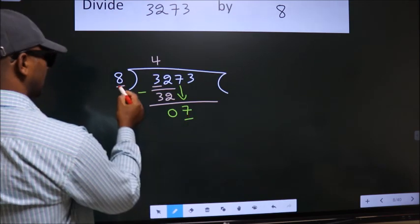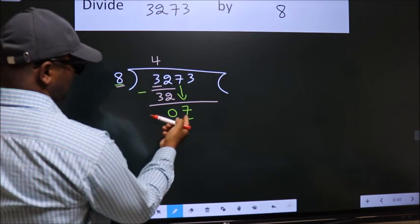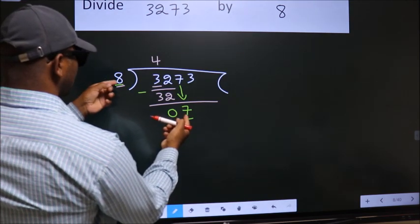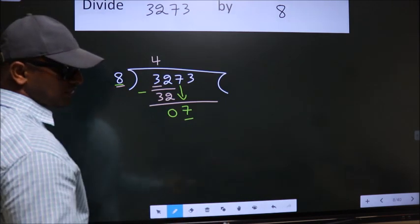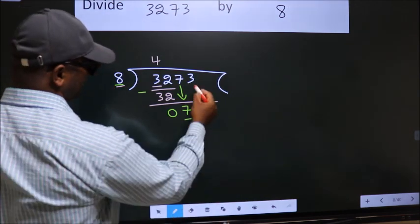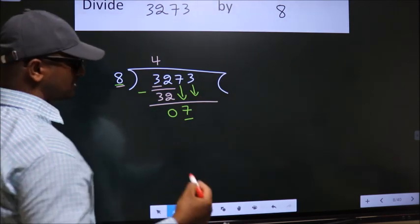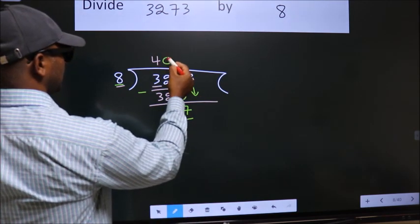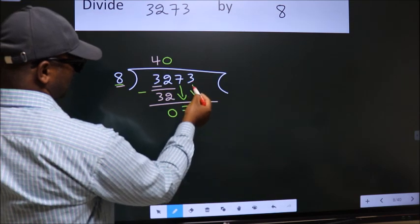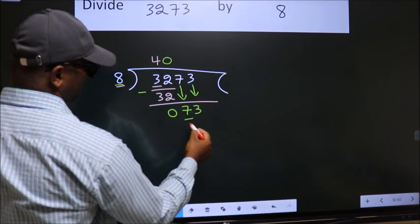Here we have 7, here 8. 7 is smaller than 8, so we should bring down the second number. And the rule to bring down the second number is put 0 here. Then only we can bring down this number.